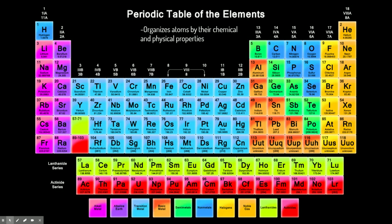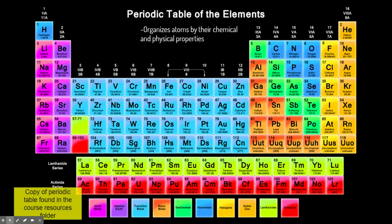Now let's talk a little bit about the periodic table of elements. This periodic table you'll see all over the place in chemistry, and it organizes atoms by their chemical and physical properties. We can use the periodic table to find information about atoms and to be able to draw Bohr models. A copy of a periodic table is found in your course resources — you might want to go find it because it has lots of important information.